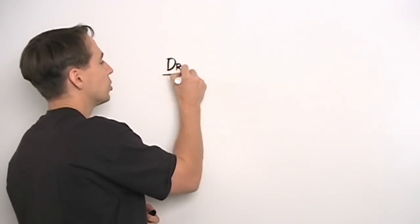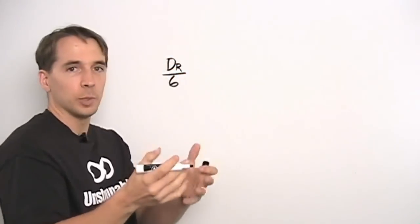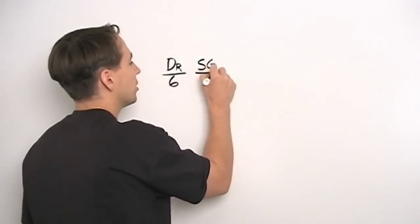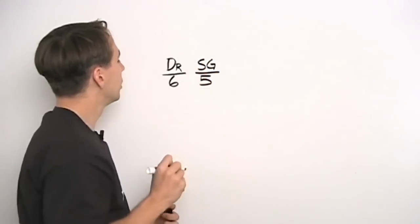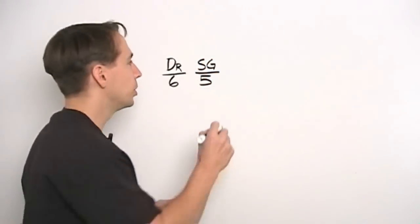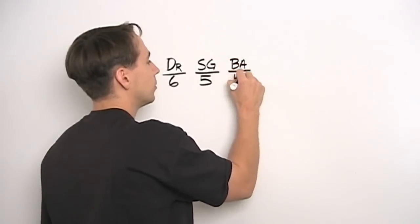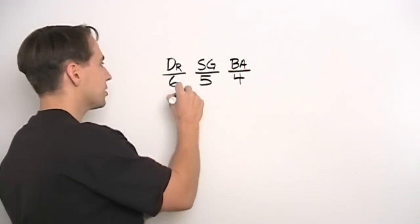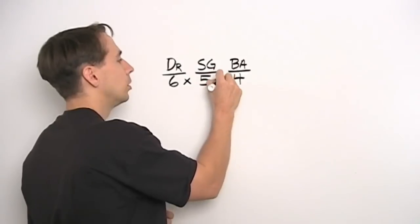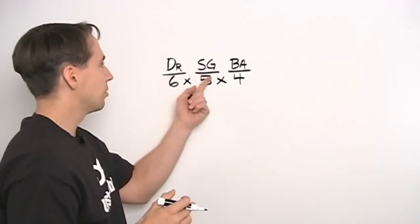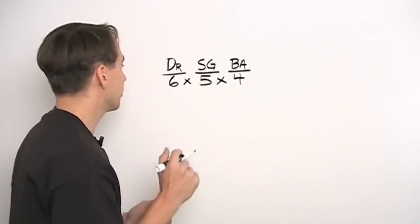And then after we chose the driver, no matter who we chose, there are still 5 people left in the office, so we have 5 people to choose from for the shotgun seat. And then after that, there are still 4 people to choose from to stick in the back seat with the pizza. So in total we'd have 6 times 5 times 4 ways that we could grab 3 of us, stick them in the car as the driver, shotgun, and back seat, and send them off to get the pizza.